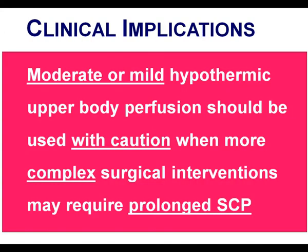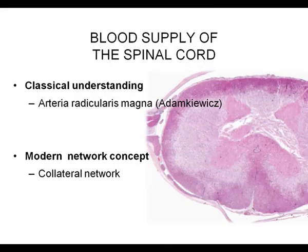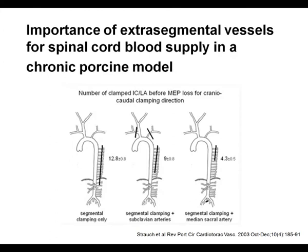There are two different understandings of spinal cord blood supply: the classical concept based on a single artery supplying the cord, and the modern collateral network concept, which is proving much more useful to modern aortic surgery. After Eustace Strauch demonstrated the importance of extra-segmental vessels for spinal cord blood supply in a chronic porcine model in 2003, we went back to the lab to directly measure spinal cord perfusion pressure for the first time.